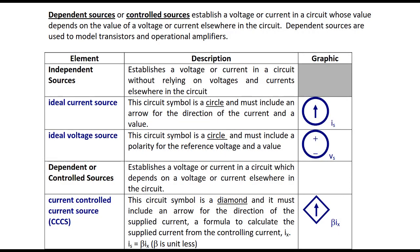Independent sources establish a voltage or current in a circuit without relying on voltage or currents elsewhere in the circuit. Dependent sources are used to model transistors and operational amplifiers. There are two independent sources. The first independent source is an ideal current source. Its circuit symbol is a circle and must include an arrow for the direction of the current and a value IS.